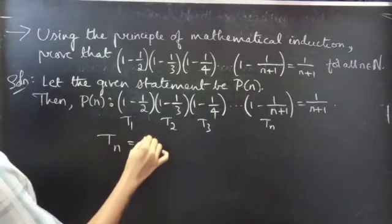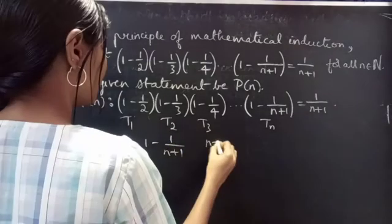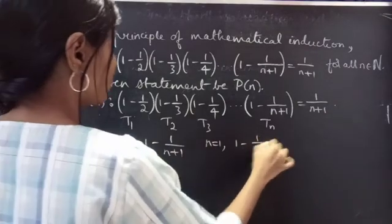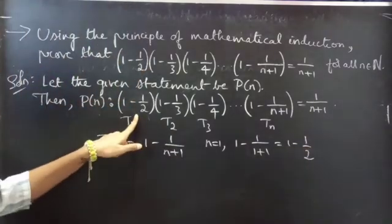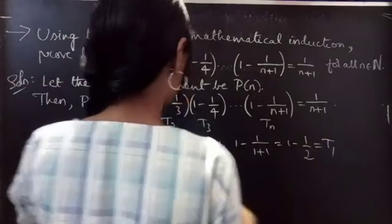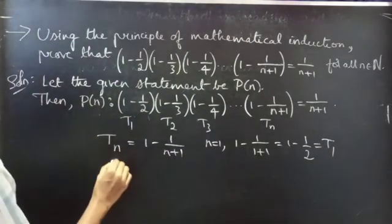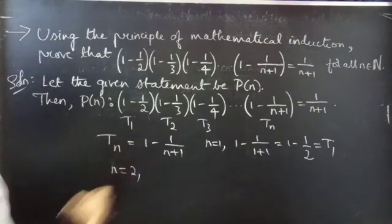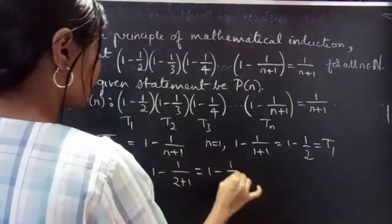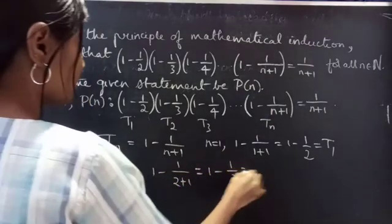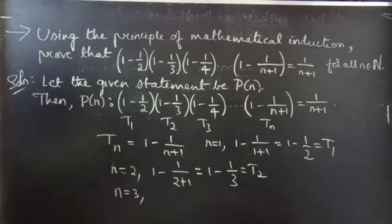So we have Tn, where Tn = 1 - 1/(n+1). If you put n = 1 in the nth term, you get 1 - 1/(1+1) = 1 - 1/2, which is the first term. If you put n = 2, you get 1 - 1/(2+1) = 1 - 1/3, which is the second term. Likewise, you get the third term when n = 3, and so on.